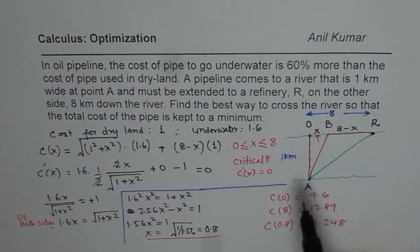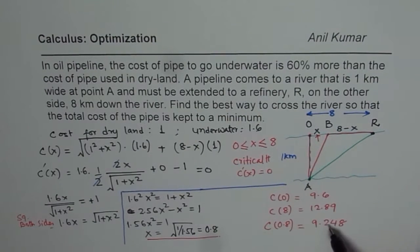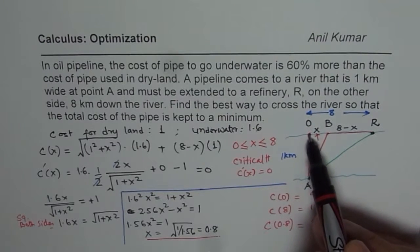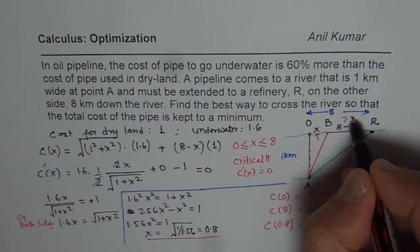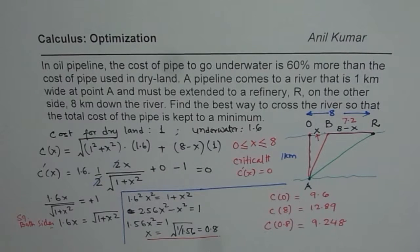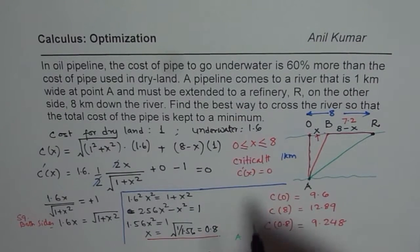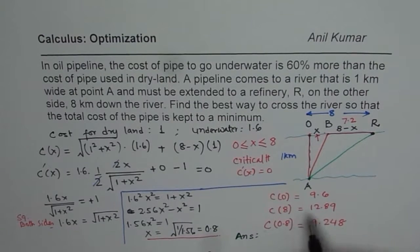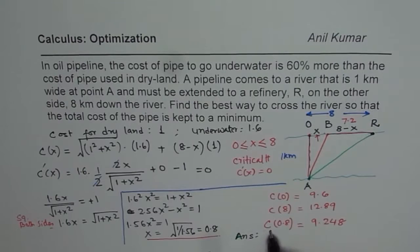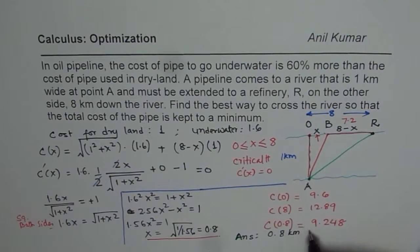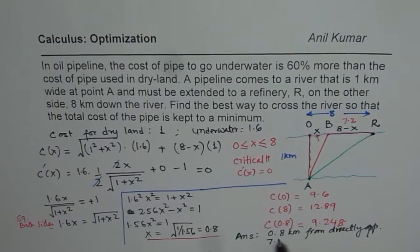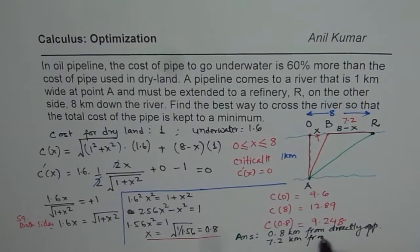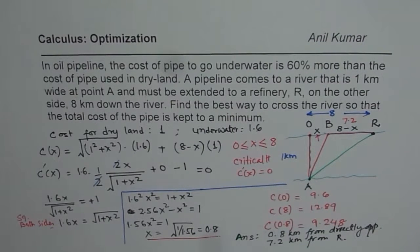When the pipe is laid x units, that is 0.8 from the opposite side, BR will be 7.2. So the answer is it should be 0.8 kilometers from directly opposite end, or you can also say 7.2 kilometers from R.